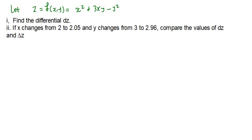For example, the volume of a given shape like a cylinder or a cone. That is how we are going to be applying total derivatives. The main idea is that we are given z = f(x, y).